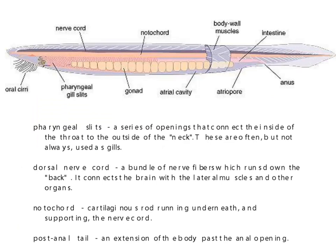In order to be a member of the phylum Chordata, you must have all of the following features at some point in life. Many of these features, especially in humans, are only found in the embryo but do go away over time. A perfect example of this are pharyngeal slits — a series of openings that connect the inside of the throat to the outside, very often used as gills. There is also what's called a dorsal nerve cord — a bundle of fibers that runs down the back and connects the brain with the lateral muscles. In vertebrates, the dorsal hollow nerve cord eventually becomes our spinal cord.